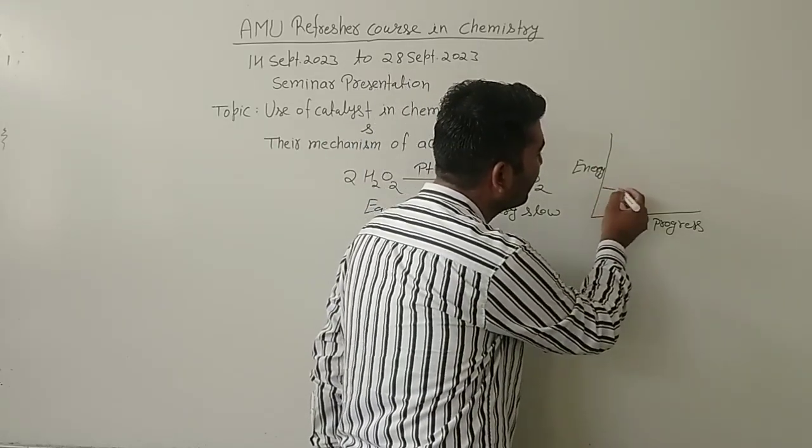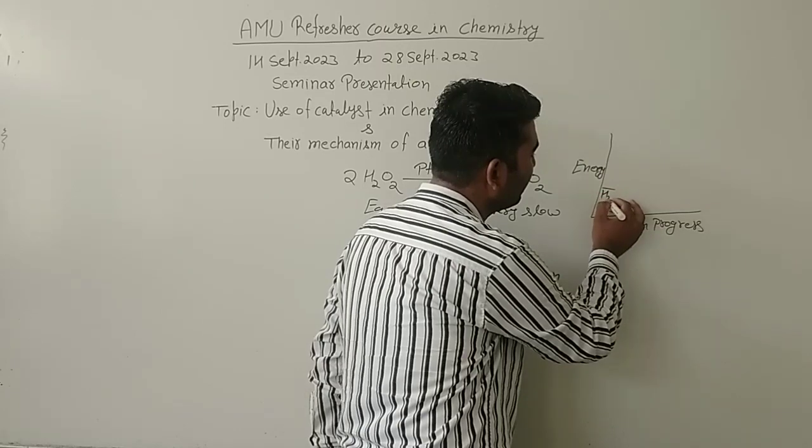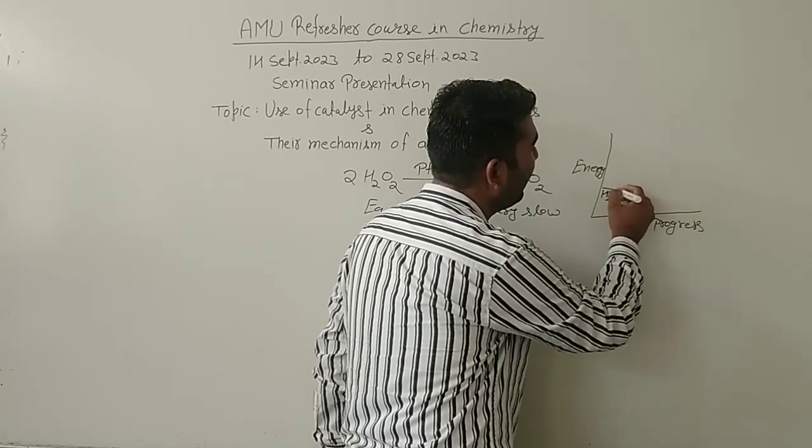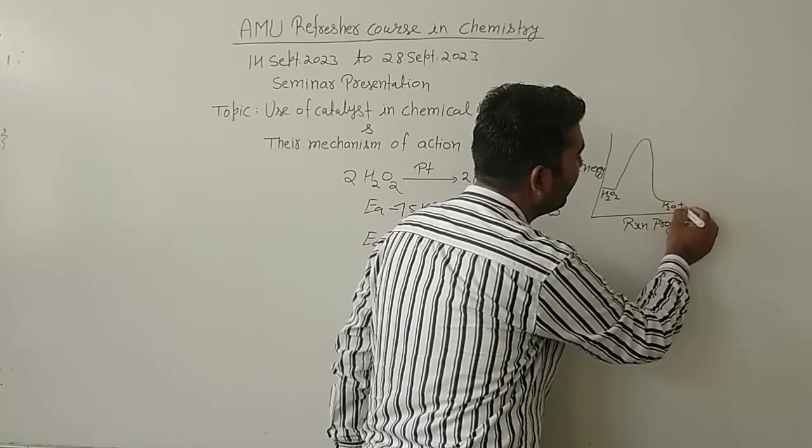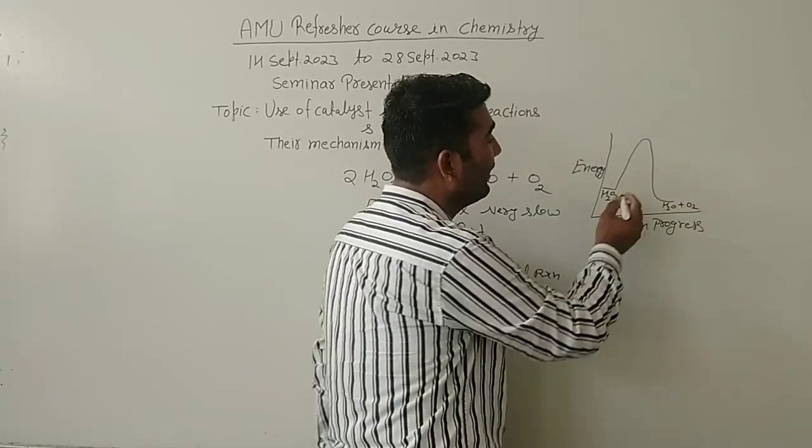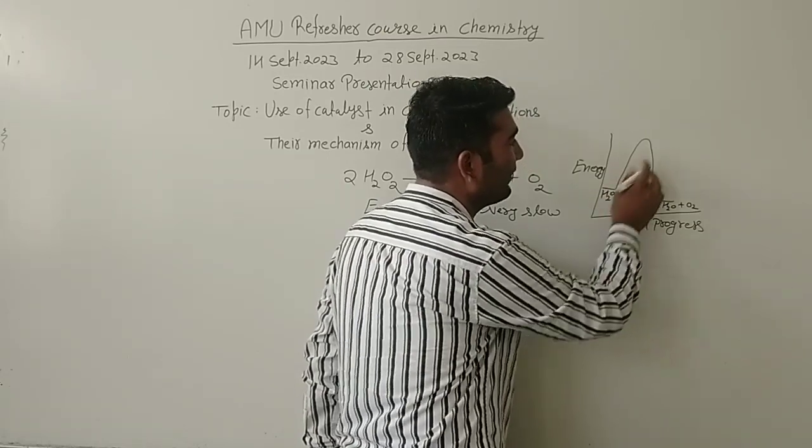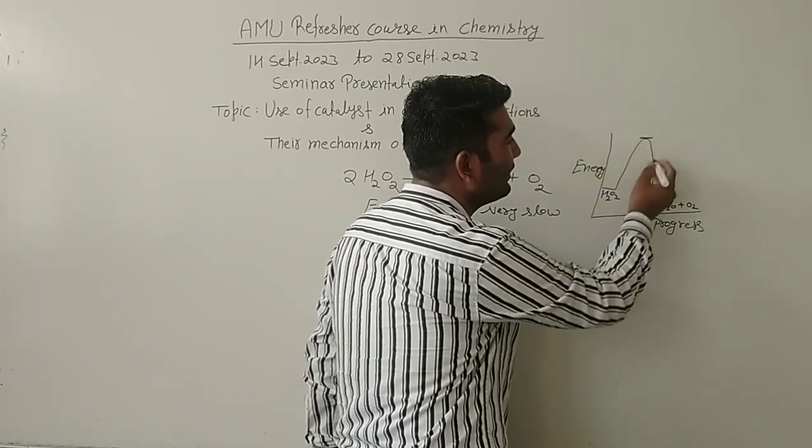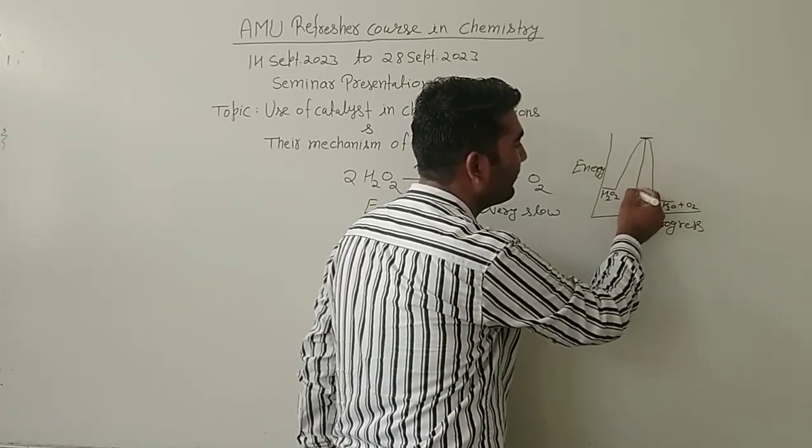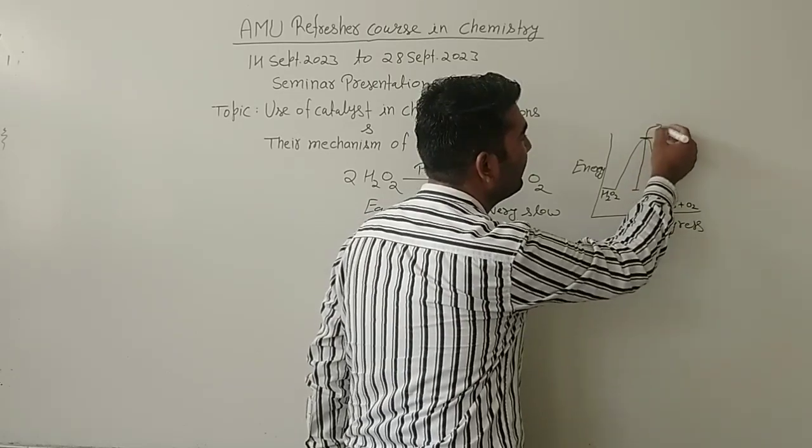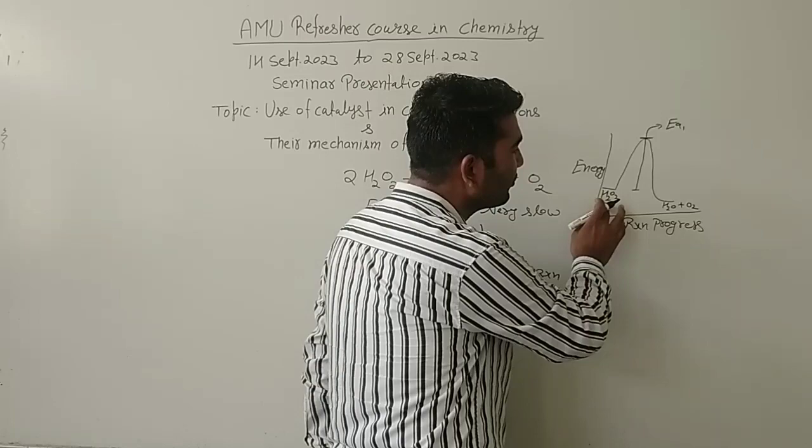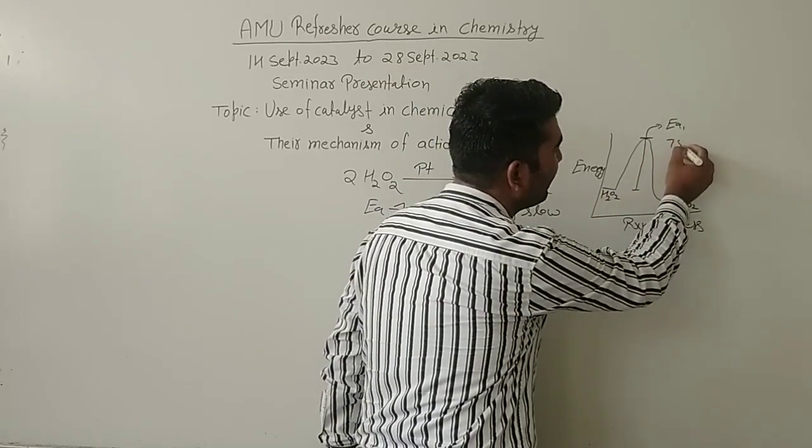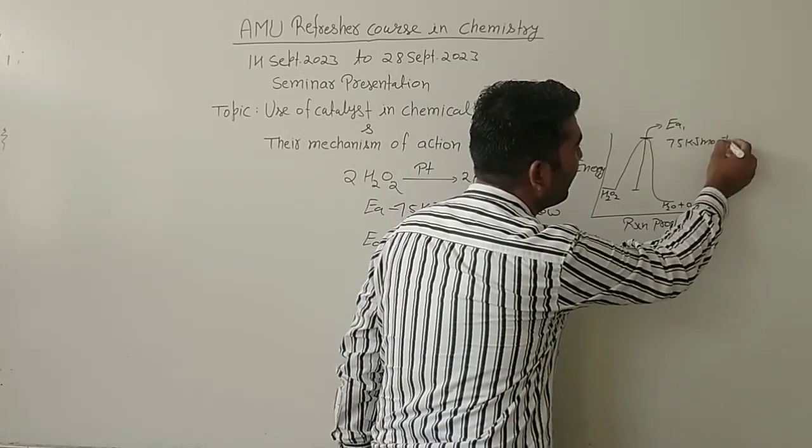Suppose these are our reactants, that is hydrogen peroxide, and it is forming the product water and oxygen gas. And this gap from reactant to this peak is known as energy of activation. Suppose we are calling it Ea1. Initially this was 75 kilojoule per mole.